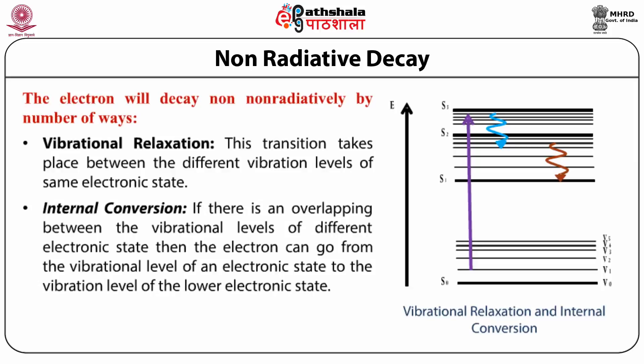Internal conversion: if there is an overlapping between the vibrational levels of different electronic states, there is a probability that the excited electron can go from the vibrational level of one electronic state to the vibrational level of the lower electronic state. This process is called internal conversion and is mechanistically identical to vibrational relaxation. By the combination of internal conversion and vibrational relaxation, an electron in an excited electronic state returns to the ground electronic state without emitting a photon. The multiplicity is conserved in both processes.